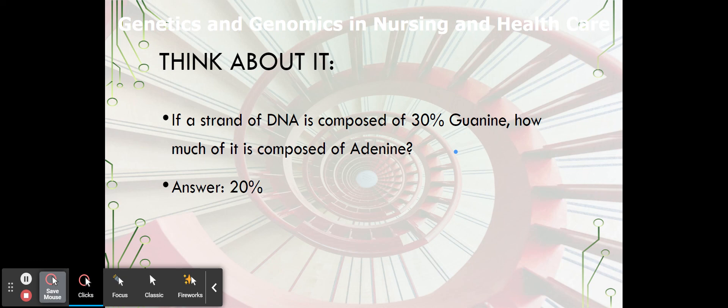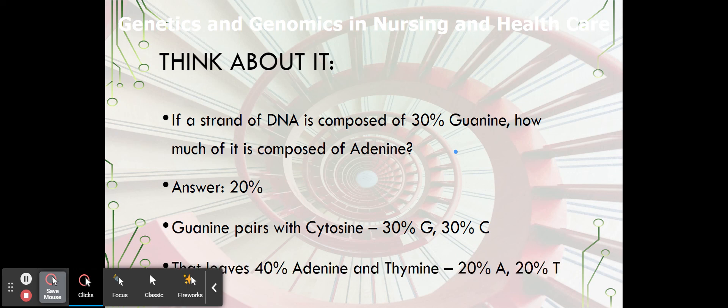The answer would be 20%. Wait, why isn't it 70%? Well, let's take a look at it. Guanine pairs with cytosine. So we have 30% guanine, 30% cytosine. That gives us 60% of our strain of DNA. That leaves 40% for the base pairs, adenine and thymine, half of each, 20, 20. So that's how we would get that.